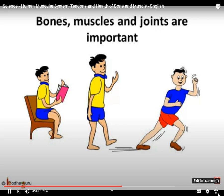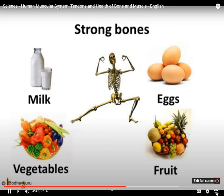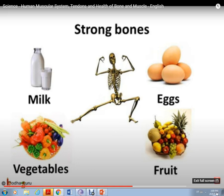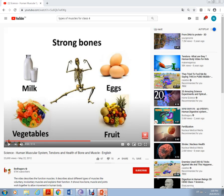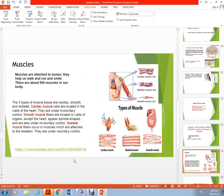We are able to stand, walk, run or even sit. Since bones and muscles are so important, how do we take care of them? We should take a healthy diet. Bones are made up of calcium and phosphorus. Bones get brittle — meaning they break easily — due to lack of calcium and phosphorus in our food. We should eat milk, eggs, and vegetables to keep our skeletal system strong.